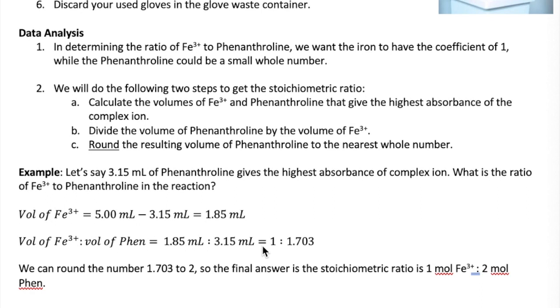I want to end this video by briefly discussing the data analysis. You'll have to first plot the data to determine the volumes of iron and Phenanthroline that produce the highest concentration of complex ion. Once you obtain these values, you'll have to reduce them to small whole numbers. In this experiment, the coefficient of iron is always 1, so it's the coefficient of Phenanthroline that we're trying to find. If you find that the Phenanthroline coefficient doesn't reduce to a whole number, all you need to do is round the number to the nearest whole number. Here's an example.